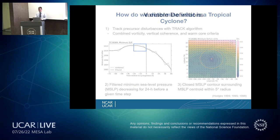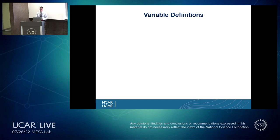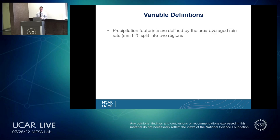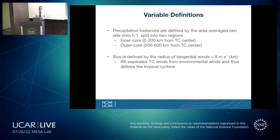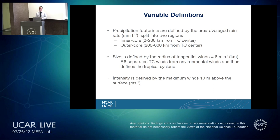It's important to describe the variables we're talking about when discussing precipitation footprint size and intensity. For precipitation footprints, we look at area-average rain rates, split into two regions: an inner core region — the innermost 200 kilometers of the tropical cyclone — and an outer core region — 200 to 600 kilometers. For size, we look at the radius of tangential winds equal to 8 meters per second, or R8. R8 distinguishes the tropical cyclone winds from environmental winds and defines the cyclone in our study. For intensity, we look at maximum winds 10 meters above the surface — the same definition used by the National Weather Service with the Saffir-Simpson Scale.